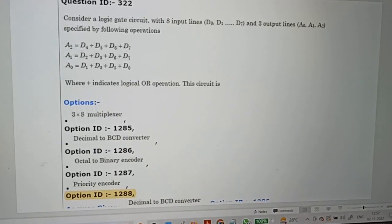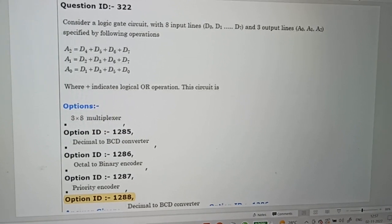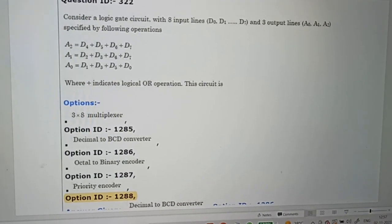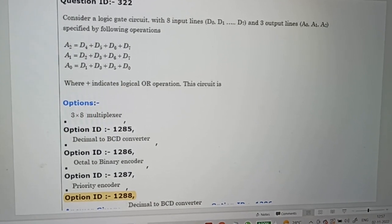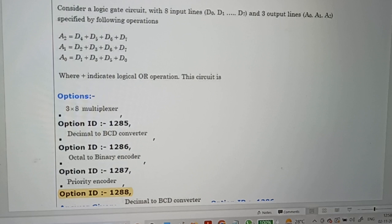Hi computer science learners, there are three changes in the final answer key as per today's release. Question number 322, the final answer key is given as the last option, that is 1288. Previously it was given as 1287.